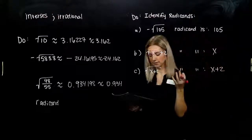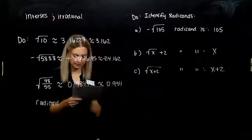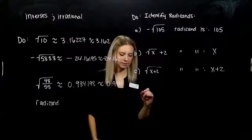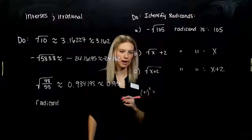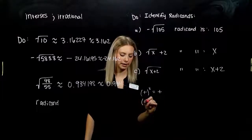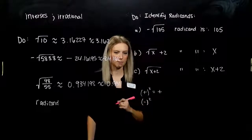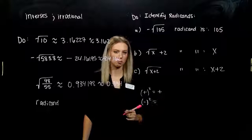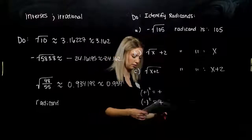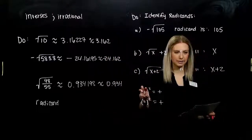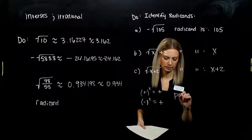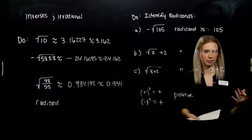The square of any non-zero number is always what? If I take a positive number and square it, I get a positive. The only other option is a negative number — if I square a negative, negative times a negative gives me a positive. So whenever I'm squaring a non-zero number, what comes out? It's always going to be positive. I can't square a number and get a negative out.